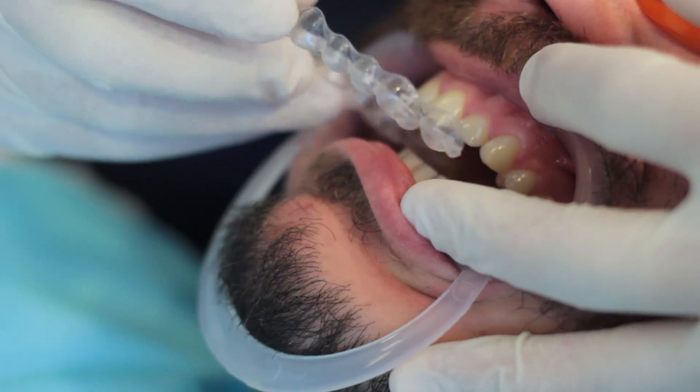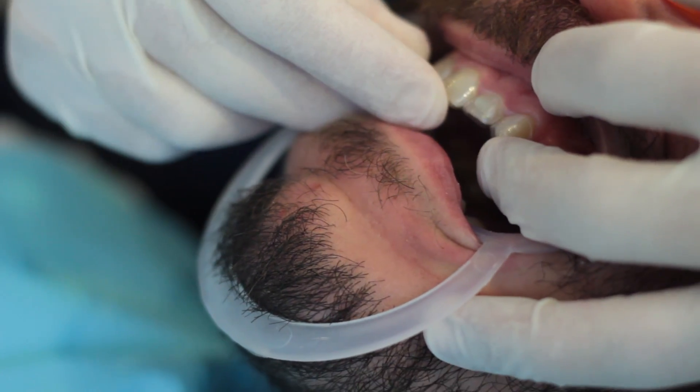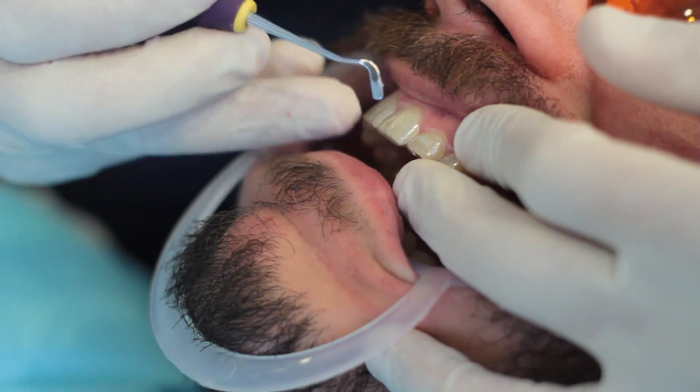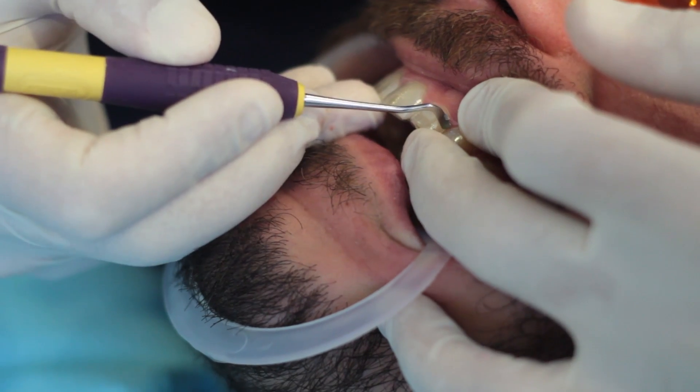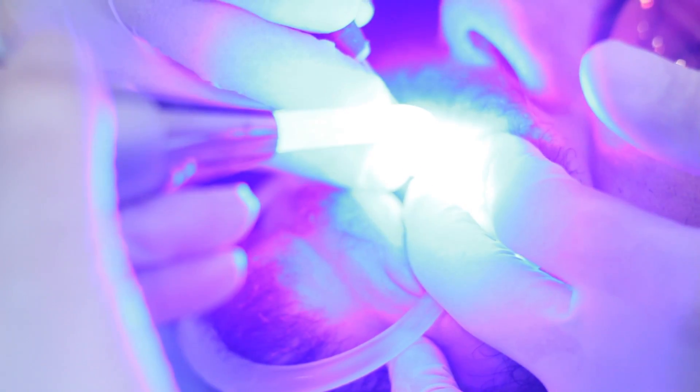Seat the loaded attachment template aligner on the patient's teeth. Then use a probe, tweezers or dental instrument to apply gentle pressure around each attachment to ensure full adaptation. Then light cure according to the manufacturer's instructions.